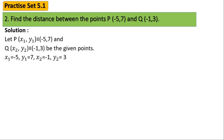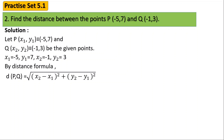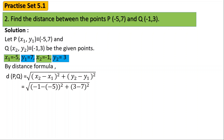We have to find the distance between point P and Q, so we apply the distance formula: the square root of (x2 minus x1) squared plus (y2 minus y1) squared. The value for x2 is -1 and x1 is -5, y2 is 3 and y1 is 7. Substituting: (-1 minus (-5)) squared plus (3 minus 7) squared. Since minus into minus becomes plus, it becomes (-1 + 5) squared plus (3 minus 7) squared, which is 4 squared plus (-4) squared.